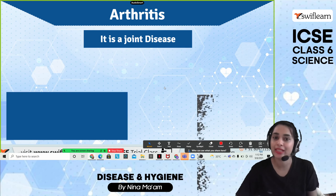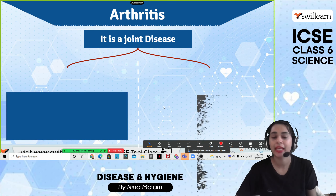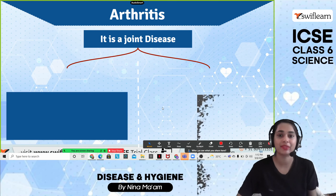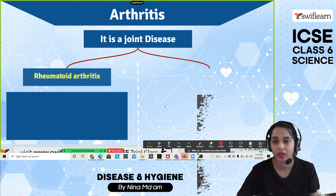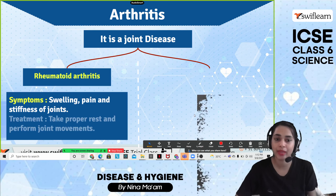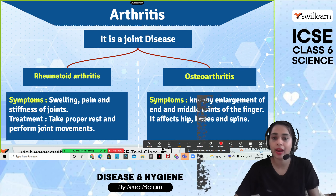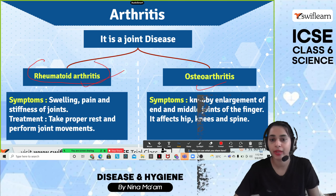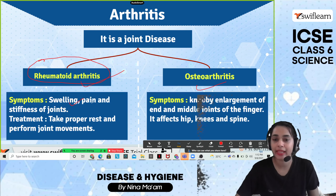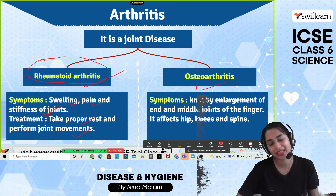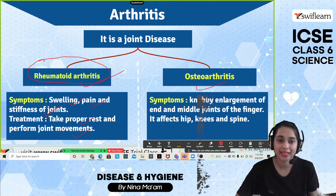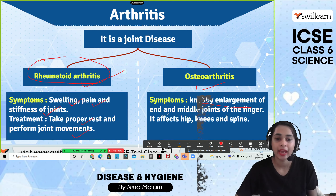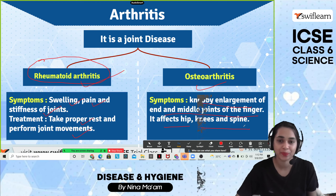Arthritis is a joint disease, especially common in elderly people. There are two types: rheumatoid arthritis and osteoarthritis. Rheumatoid arthritis causes swelling, pain, and stiffness of the joints; treatment includes proper rest and performing joint movements. Osteoarthritis causes enlargement of the end and middle joints of the fingers and affects the hip, knees, and spine.